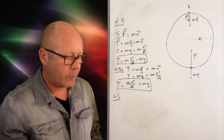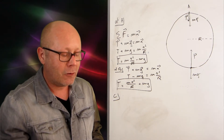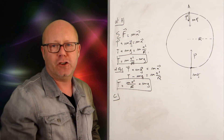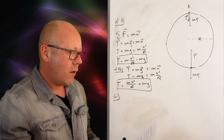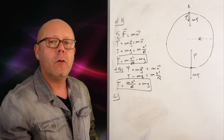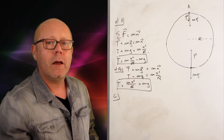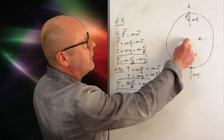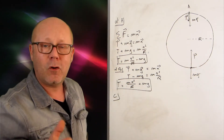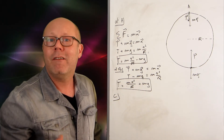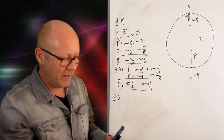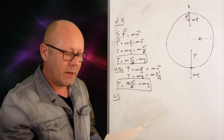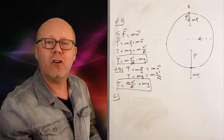Question C: calculate the minimum speed so that the string always stays straight. The string always staying straight means the distance between the object and the center of the circle must always remain the same. So we can translate this question as: calculate the minimum speed so that the object stays in circular motion.